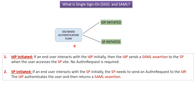There are two types of SSO-based authentication flow. The first one is IDP initiated and the second one is SP initiated. In IDP initiated flow, if an end user interacts with the IDP initially, then the IDP sends a SAML assertion to the SP when the user accesses the SP site. In this case, an authN request is not required.